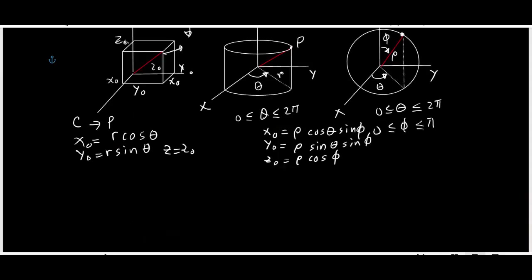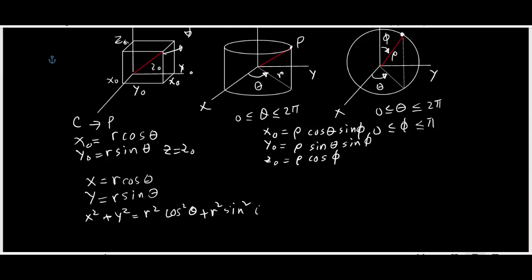In general: x = r cosθ and y = r sinθ. So x² + y² = r² cos²θ + r² sin²θ. Factoring out r² gives r²(cos²θ + sin²θ) = r², using the Pythagorean identity. So x² + y² = r².